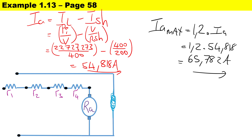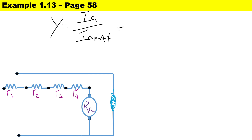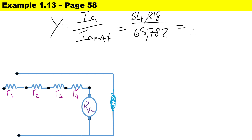Now we can calculate the ratio represented by the letter y. It is Ia over Ia_max: the normal armature current is 54.818 and the maximum armature current is 65.782, giving us a ratio of 0.833. This ratio is important for all our other calculations, and as a reminder there are four elements.